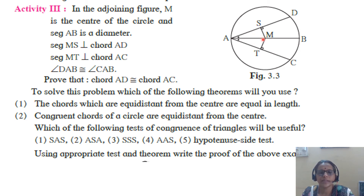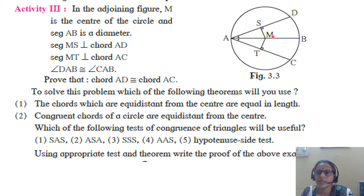Perpendicular from center SM is congruent with MT, which means chords equidistant from the center are equal in length. So AS is congruent with AT. Since perpendicular from center bisects the chord, AS equals SD and AT equals TC. Therefore, AS plus SD equals AT plus TC, that is AD is congruent with AC.